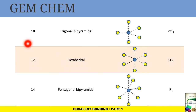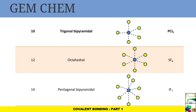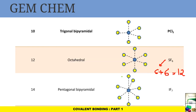For a ten-electron count, the structure is trigonal bipyramidal, where two atoms are above and below the plane and three atoms are in the plane with the central atom. The example is PCl5. For twelve electrons the structure is octahedral — example SF6: sulfur has six valence electrons plus six from the six fluorines giving twelve. For fourteen electrons the structure is pentagonal bipyramidal, example IF7: iodine has seven electrons plus seven from the seven fluorines giving fourteen.